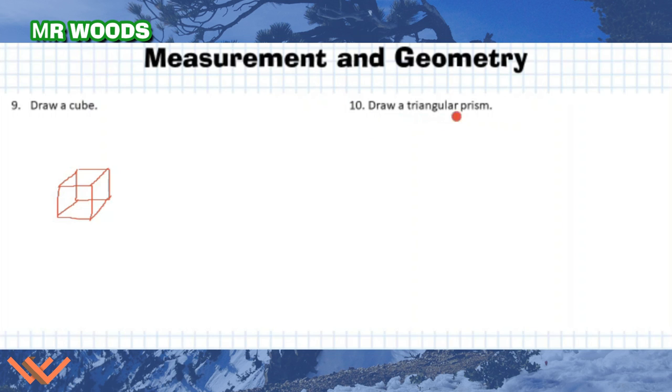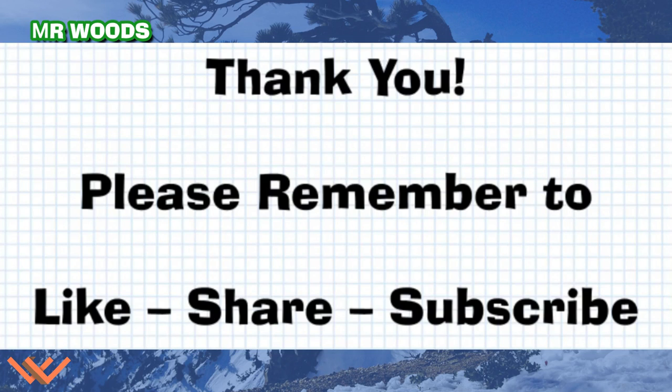Number 10 here, it says draw a triangular prism. Hmm. Well, it's going to be a triangle. I draw another triangle of equal size over here. And then I just connect its points similar to a cube. There we go. There's my triangular prism. That's it for measurement and geometry.